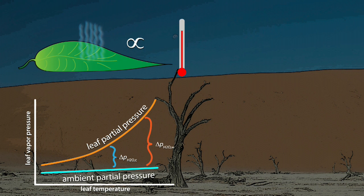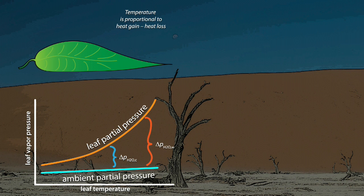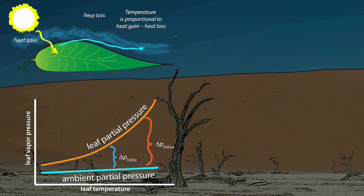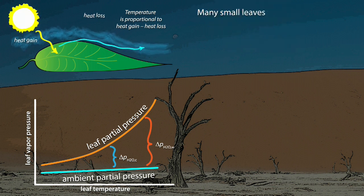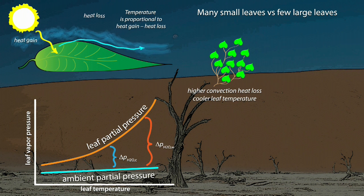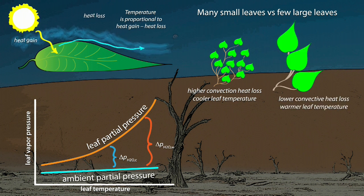The leaf's temperature is the outcome of an energy budget at the leaf surface that balances heat gain against heat loss. This is a complicated issue, and you can see more details in another video. For our purposes, one way to keep leaf temperatures cool in a hot sunny environment is to sprout numerous small leaves rather than a few large ones. You can see this in the tiny leaves of most desert plants, such as this acacia.